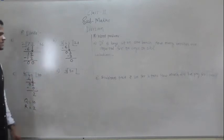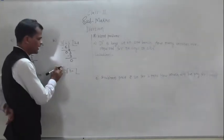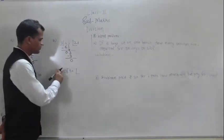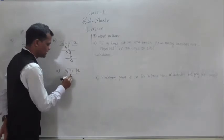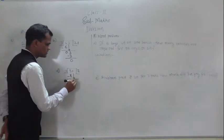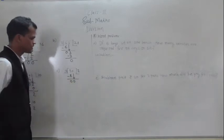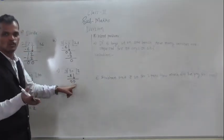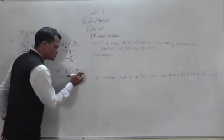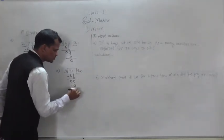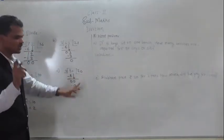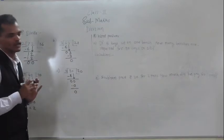Next example: 80 divided by 4. 4 twos are 8, so write 2 and subtract: 8 minus 8 is 0. Take the next digit down — it is 0. 0 divided by any number gives quotient 0. Write 0 and subtract 0 from 0: 0 minus 0 is 0. So the quotient is 20 and the remainder is 0.